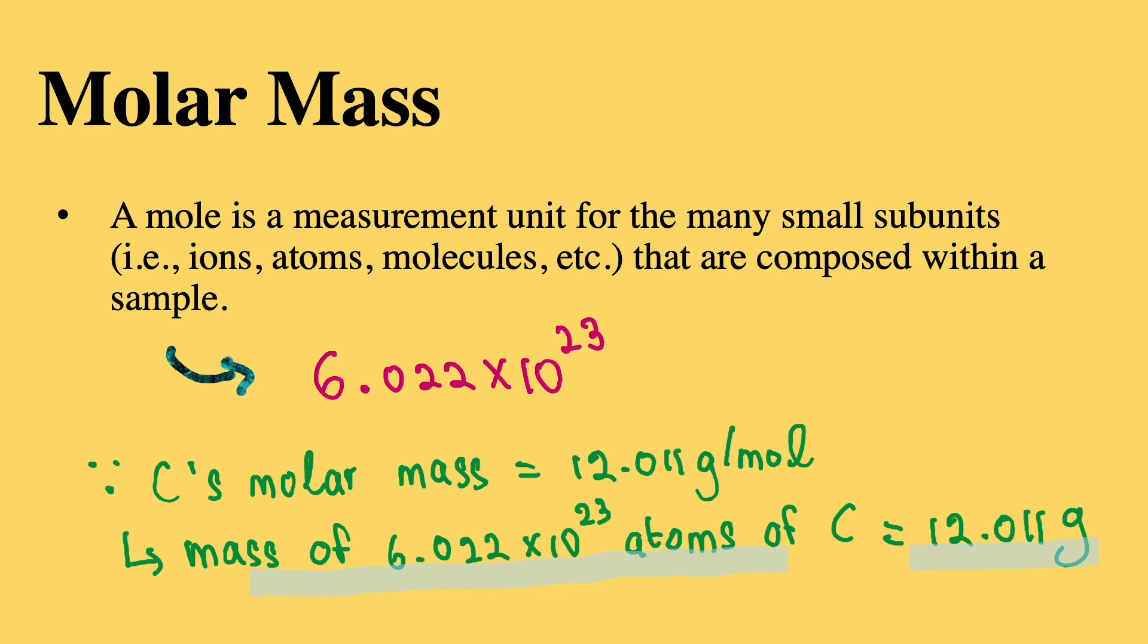Since carbon's molar mass is 12.011 grams per mole, the mass of 6.022 × 10^23 atoms of carbon is equal to 12.011 grams. This is what is meant by the concept of molar mass.